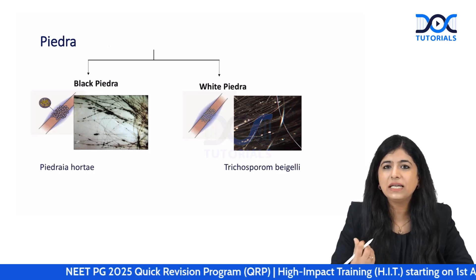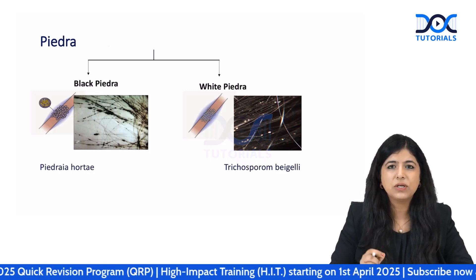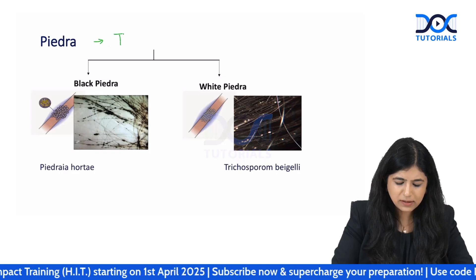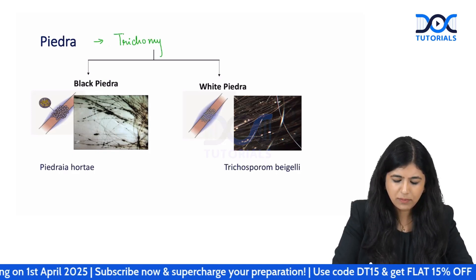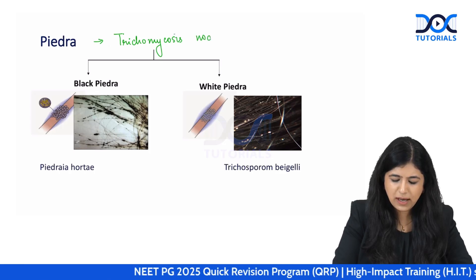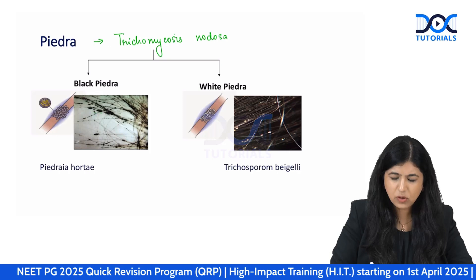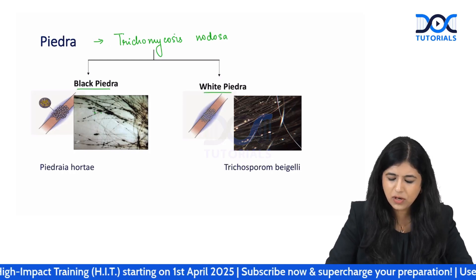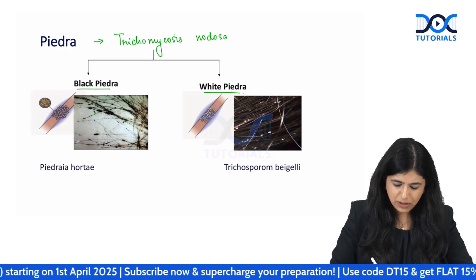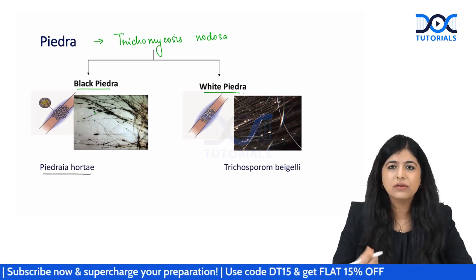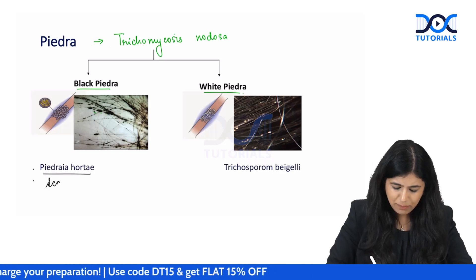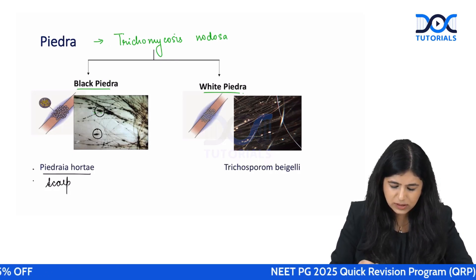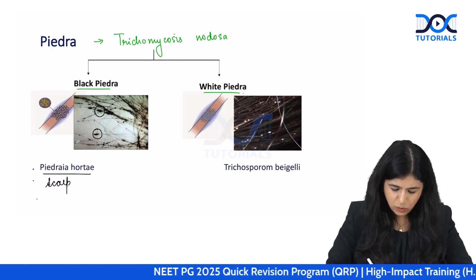Piedra is a superficial infection of the cuticle of the hair shaft where the fungus produces small stone-like concretions on the surface of the hair, which is why it is also called trichomycosis nodosa. There are two types: black piedra and white piedra. Black piedra is caused by Piedraia hortae and is more commonly found on scalp hair, producing black, hard, adherent nodes on the hair shaft.